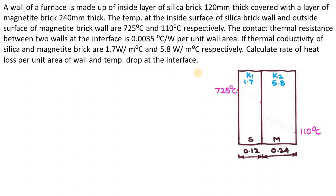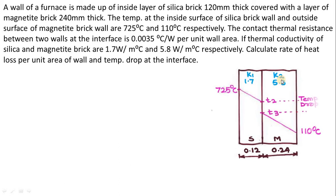Now, if I convert this problem graphically, it will look like this: 725°C on the left-hand side and 110°C on the right-hand side with the conductivities. Since there is a temperature drop, I have to show the temperature drop at the interface only. This will be T2 and this will be T3. While calculating heat transfer through the silica slab, we consider 725°C and T2. While calculating heat transfer through the magnetite brick wall, we consider T3 and 110°C.